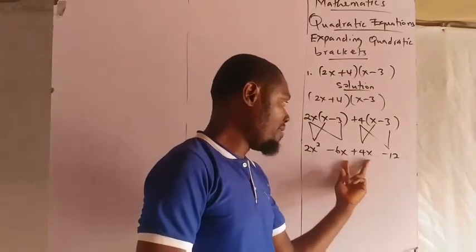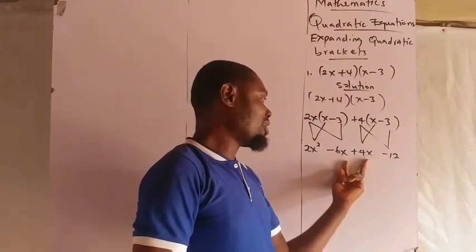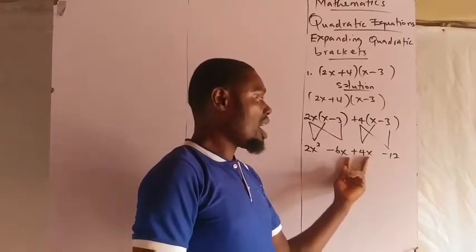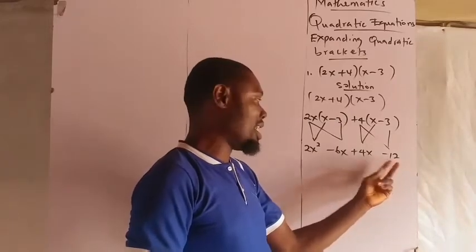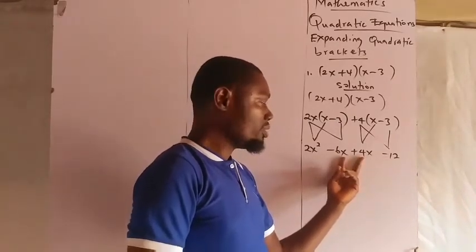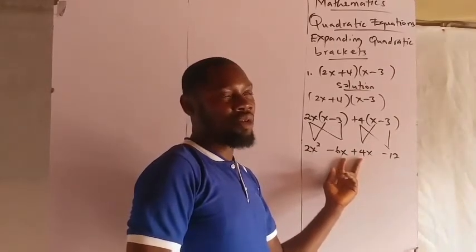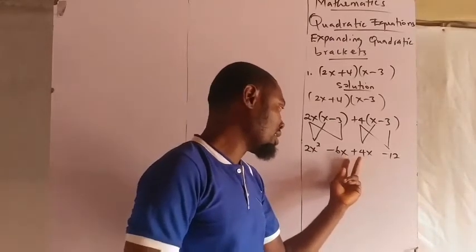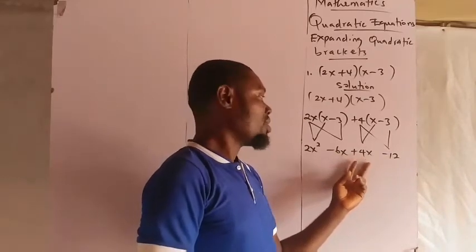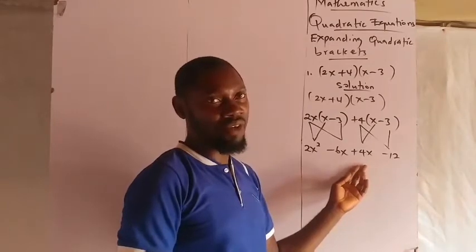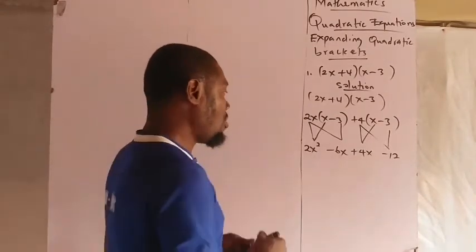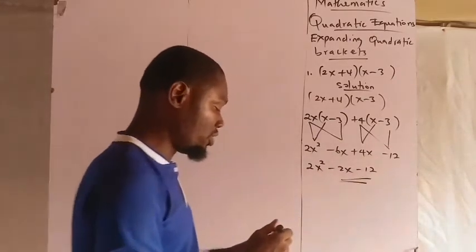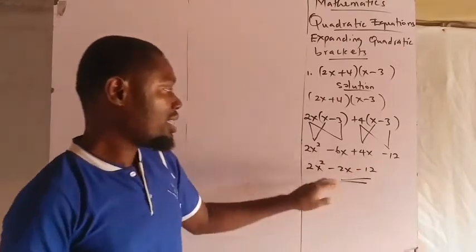We can simplify the like terms. This x squared is not the same as the plain x terms — this one is raised to power 2. We have minus 6x plus 4x: you're giving out 6x and you have 4x, so you're left with minus 2x. Therefore our final result is 2x squared minus 2x minus 12, because minus 6x plus 4x is minus 2x.